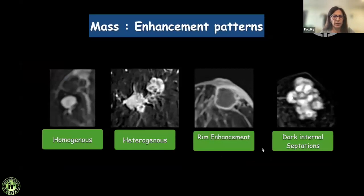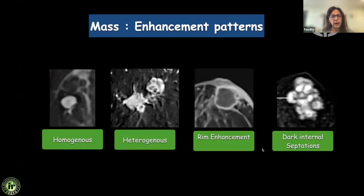Then we look at the enhancement pattern, which is unique to MRI. Enhancement of masses can be homogeneous, heterogeneous, rim enhancement, or dark internal septations. Homogeneous enhancement suggests a benign lesion; heterogeneous suggests malignancy. Rim enhancement can be seen in both benign and malignant lesions, and dark internal septations are most commonly seen in fibroadenomas.